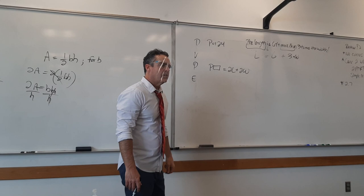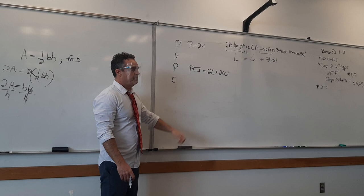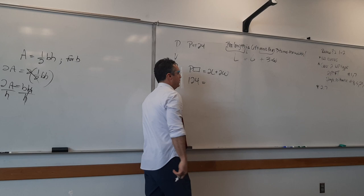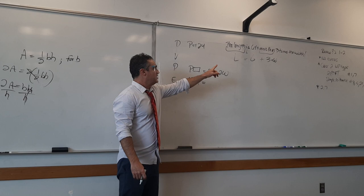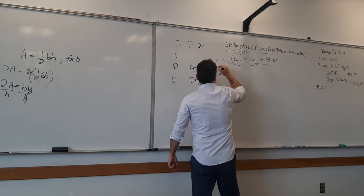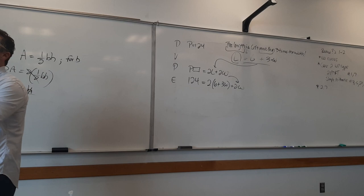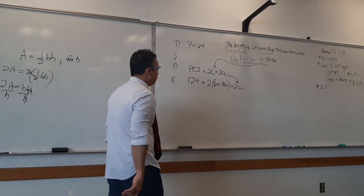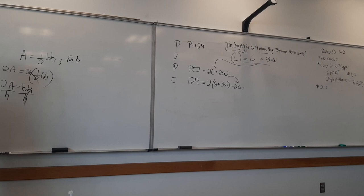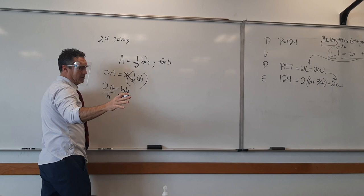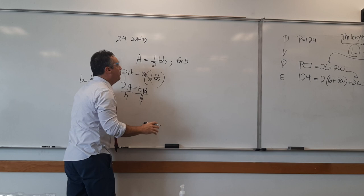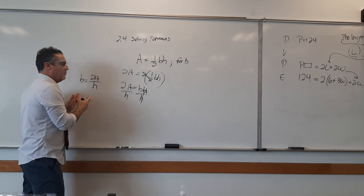How many variables in this equation right now? Three. P, L, W. What's P? 124. They gave you that. What's L? Six plus three W. So, when we get L equals this, we get to substitute it in for here, so now we get 124 equals 2 times (6 plus 3W) plus 2W. Now do I have a one variable equation? Yes. And now I can solve it. The comparison statement will allow you to plug that in.